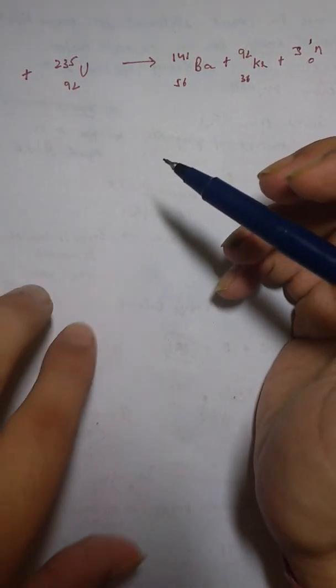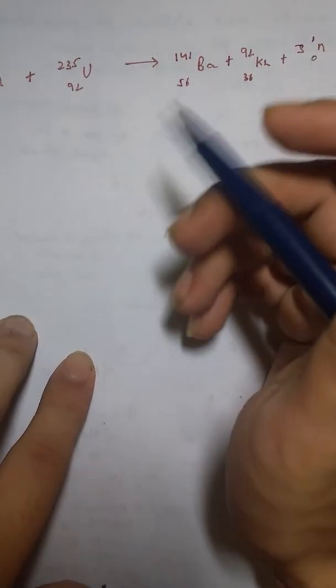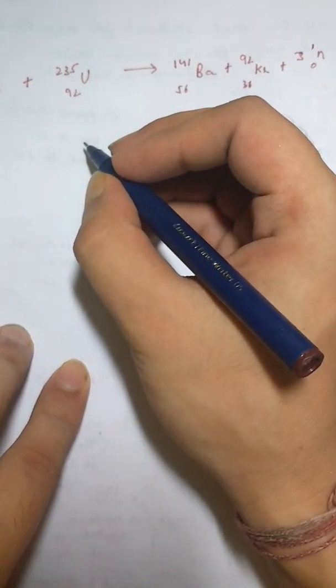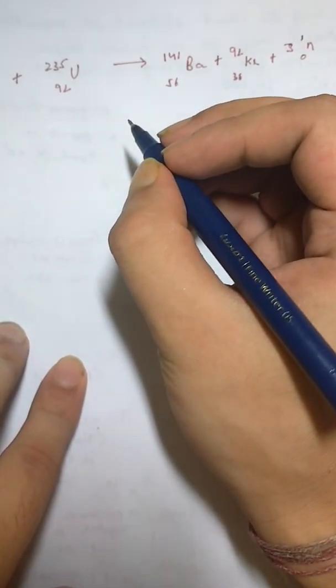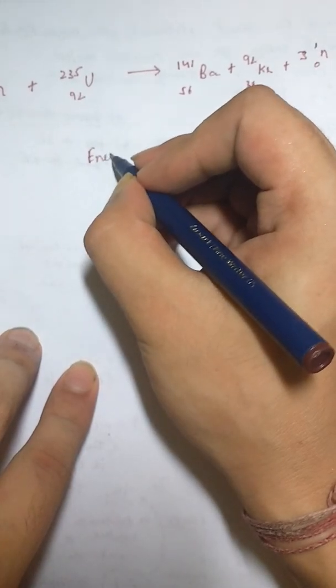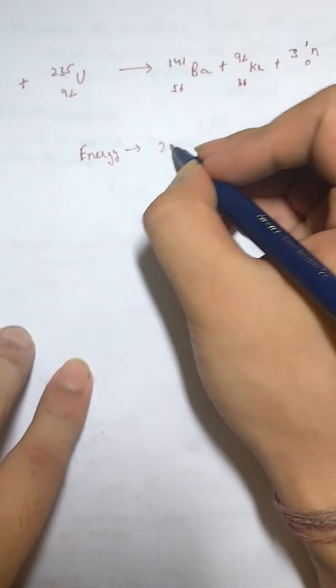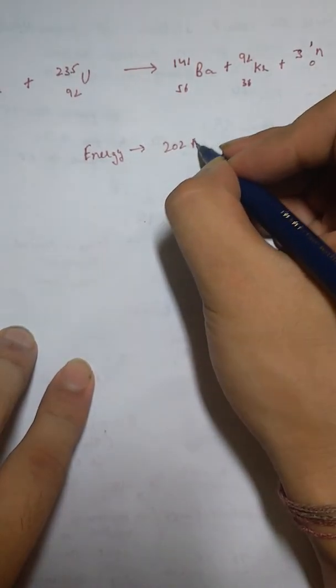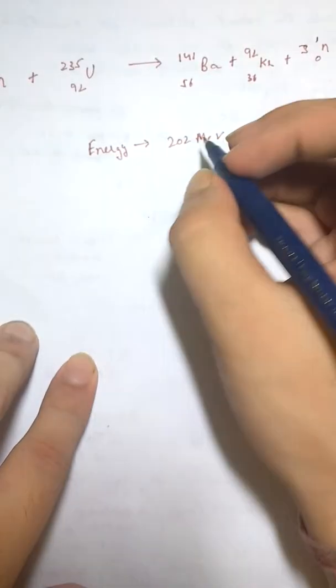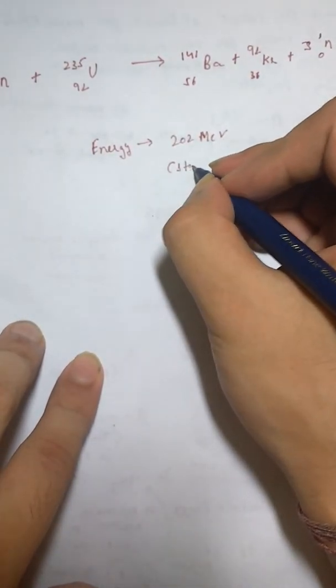First, the second statement that it gives only one neutron is incorrect. The energy released for this reaction is equal to 202 MeV, close to 202 MeV, so the C statement is correct.